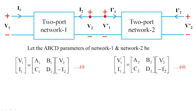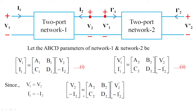Let me frame these as equations 1 and 2. We also assume here that V1' is equivalent to V2 — that is, the output voltage of network 1 is connected as input voltage to network 2 — and I1' equals minus I2 for the entering currents. When you substitute V1' equals V2 and I1' equals minus I2 into equation 2, we get V2 and I2 in terms of V2' and I2'. Let me frame this as equation 3.